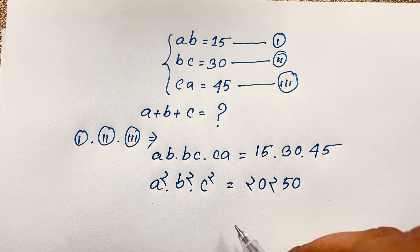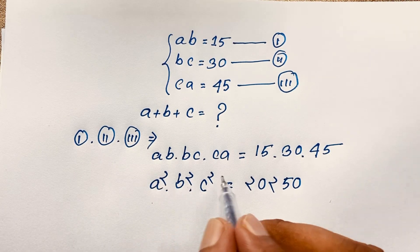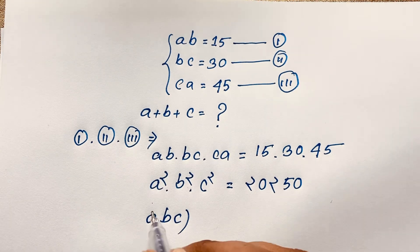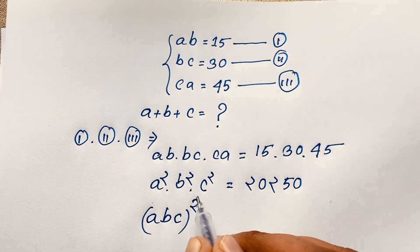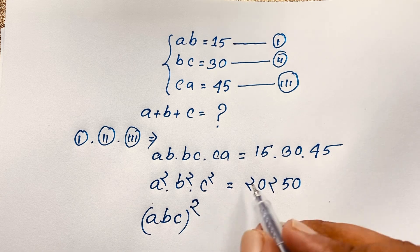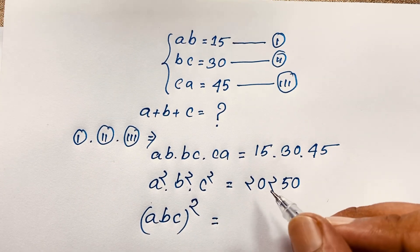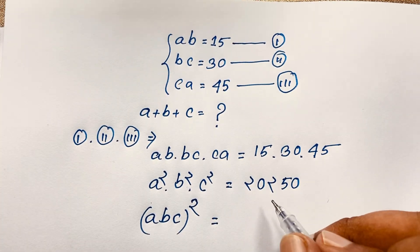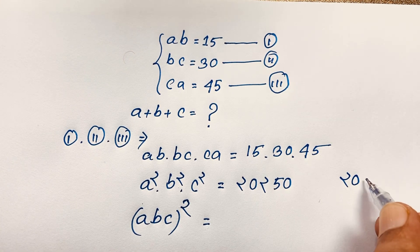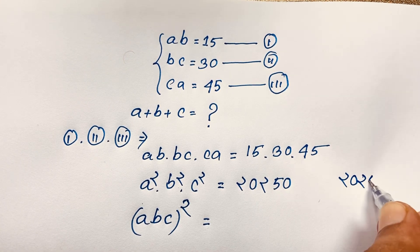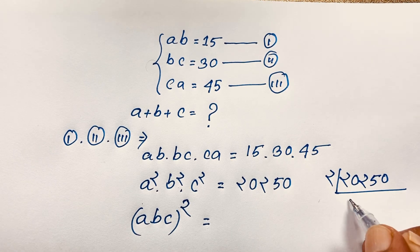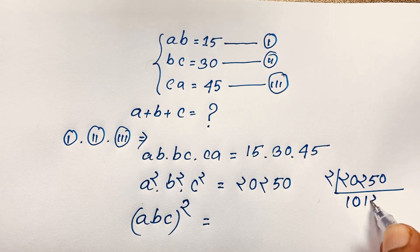Since the exponents are the same on each variable, the left side becomes (abc)² = 20,250.